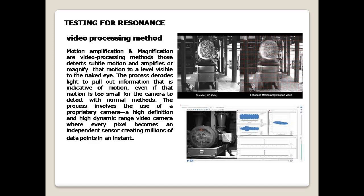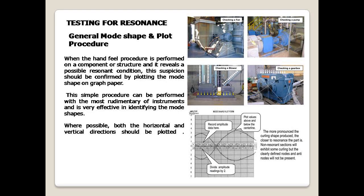Video Processing Method: Motion amplification and magnification are video processing methods that detect subtle motion and amplify or magnify that motion to a level visible to the naked eye. The process decodes light to pull out information indicative of motion, even if that motion is too small for the camera to detect with normal methods. It involves the use of a proprietary high-definition, high dynamic range video camera where every pixel becomes an independent sensor, creating millions of data points in an instant.